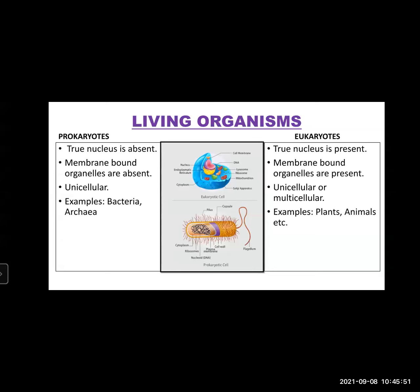In cells, various organelles are there, and they have membranes around them. Such organelles which have membranes are absent in prokaryotes. Such organisms — prokaryotes — are unicellular. Unicellular means they are made up of one cell, and that one cell is carrying out all the life processes for those organisms. Examples: bacteria, archaea. These are the few examples of prokaryotes.